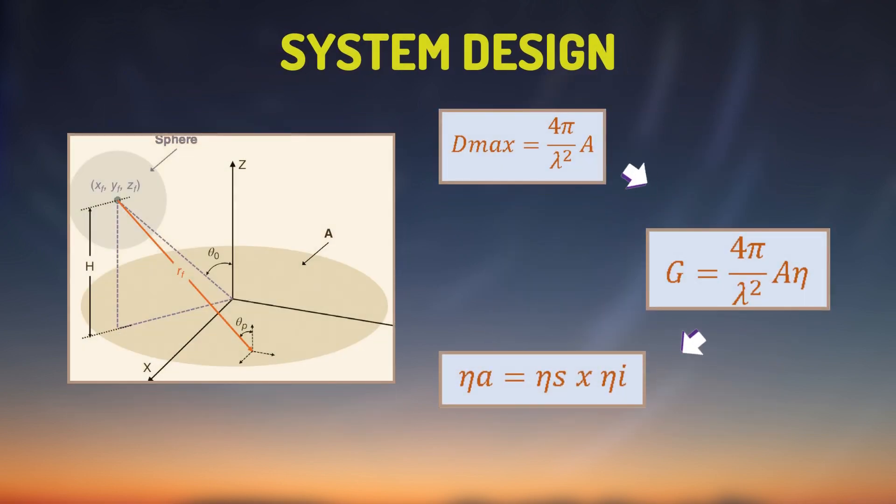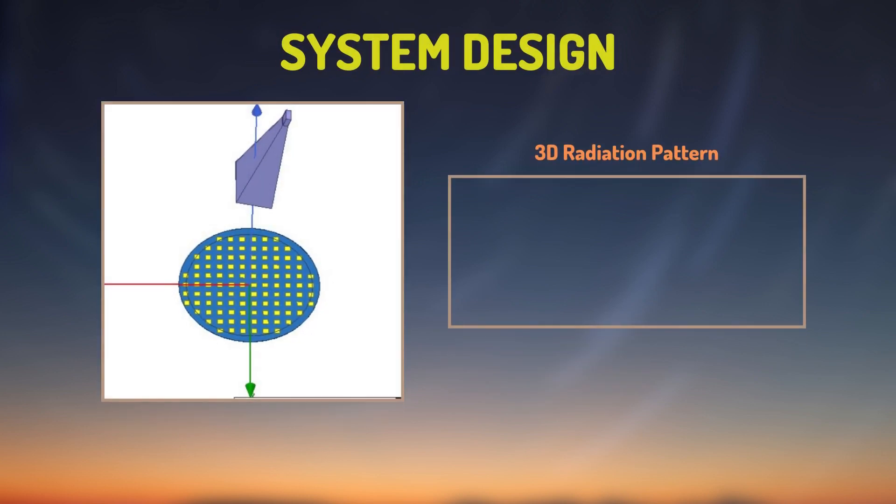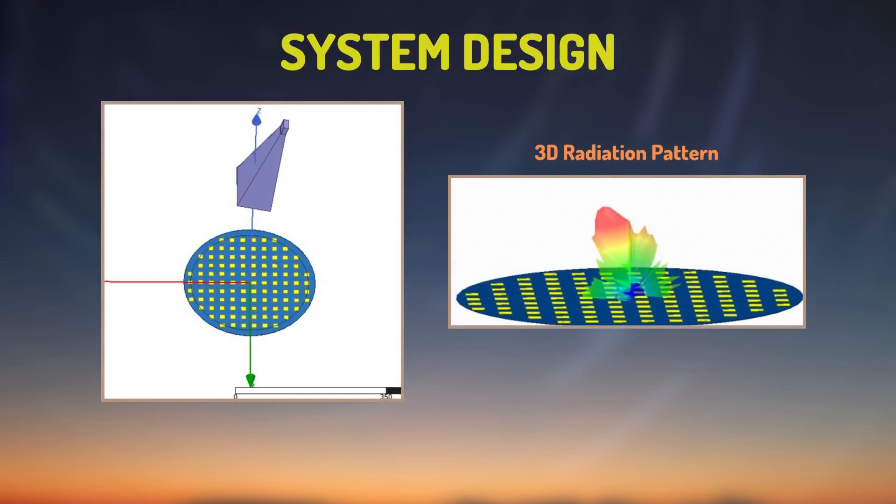Gain can be obtained by using directivity and aperture efficiency which is product of spillover and illumination efficiency. Antenna was located where the far field region starts. If the horn antenna is placed orthogonal without any rotation, feed antenna can block some of the radiation. To get rid of this blockage effect, horn antenna needs an offset value which is minus 15 degrees.